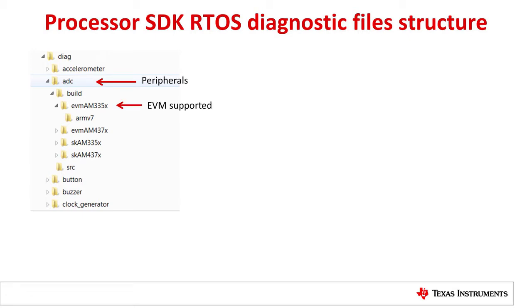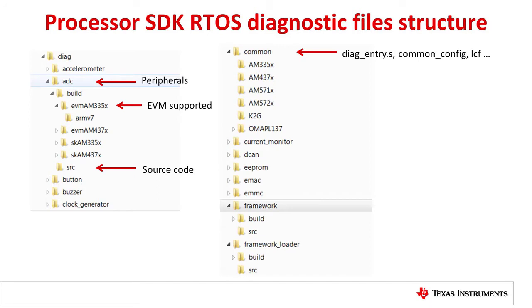Under BUILD, there's a list of what EVMs are supported. SRC is the source code folder. The Common folder has assembly code to enter the test application, as well as common configurations and the linker command file. The Framework Loader folder is used to load the framework. The Framework folder is used to pass the test cases, run them, and print the test status. This folder also handles board setup.